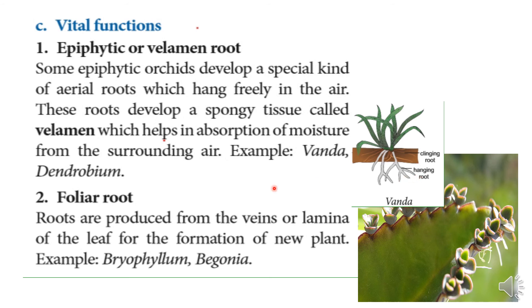Next, Foliar Root. Foliar roots arise from the leaf — from the margin, veins, or lamina of the leaf blade.